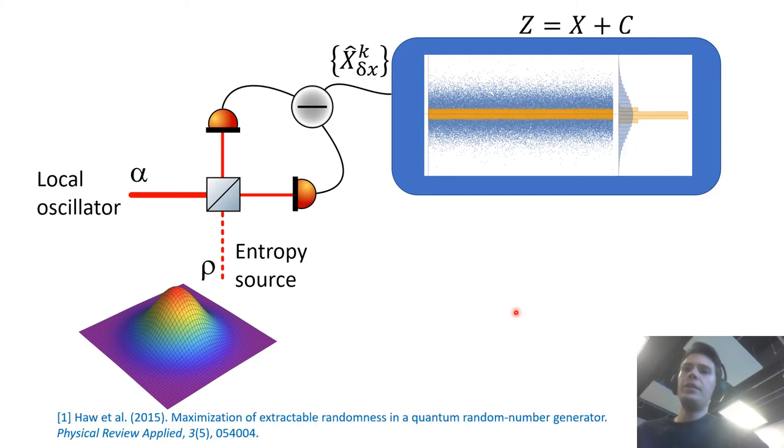Now in a more practical setting your noise data actually has some classical part contribution that would come from classical noise in your measurement device. And you can improve the security of your device assuming that an adversary would have access or even control over this classical noise.